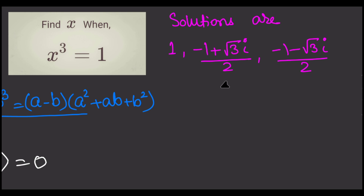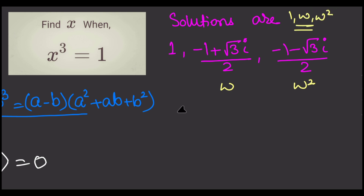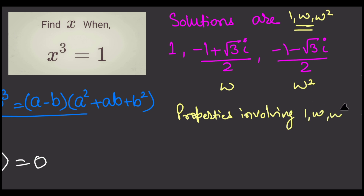Minus 1 plus root 3i by 2 is called omega. And when you will square this term, you will get this. So this becomes omega square. These roots are called the cube roots of unity: 1, omega, and omega square. And there are some important properties involving these roots which are helpful in solving many problems.